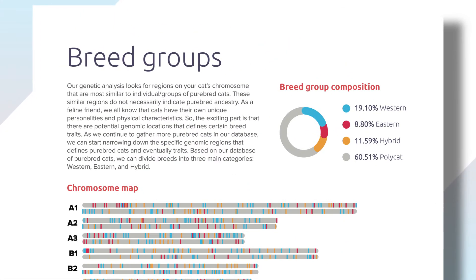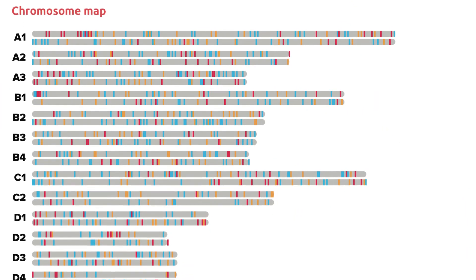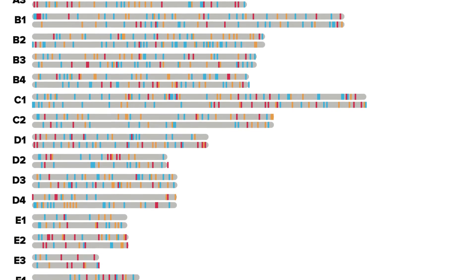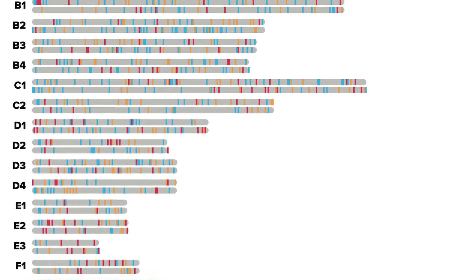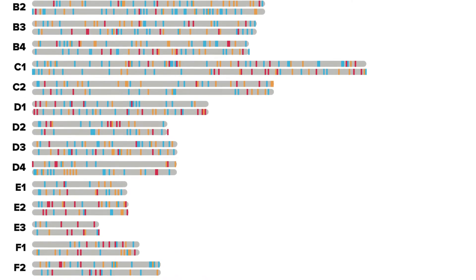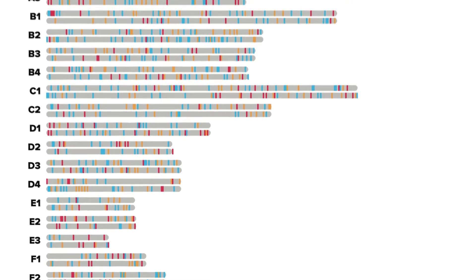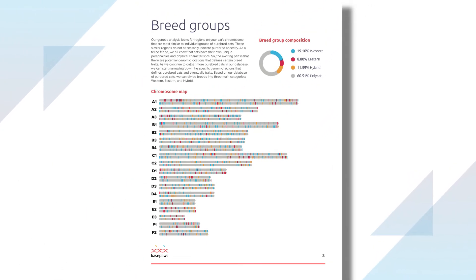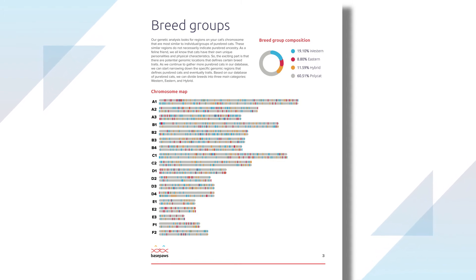You can see the breed group influence broken down into percentages, along with the chromosome painting below. Chromosome painting helps us visualize where the genetic similarities occurred across the millions of base pairs that we analyzed. Each color corresponds to a breed group at the top of the page to show where each part of your cat's genetic code relates most closely to.